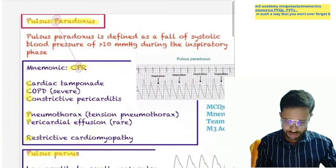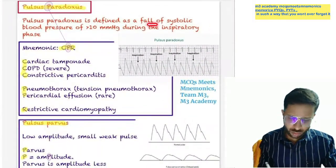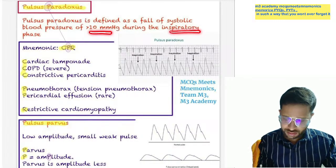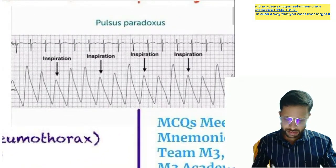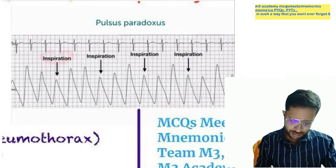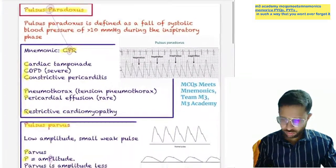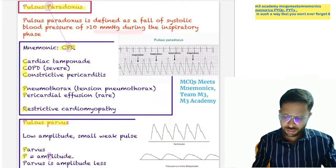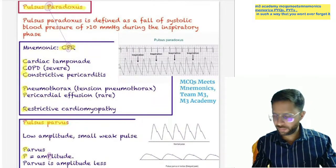Pulsus paradoxus is a fall of the systolic BP more than 10 mmHg during the inspiratory phase. You can see in this picture — in inspiration this pulse is going down. So, a fall in the systolic BP more than 10 mm during the inspiratory phase is pulsus paradoxus.